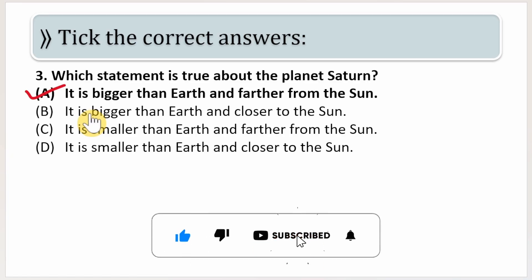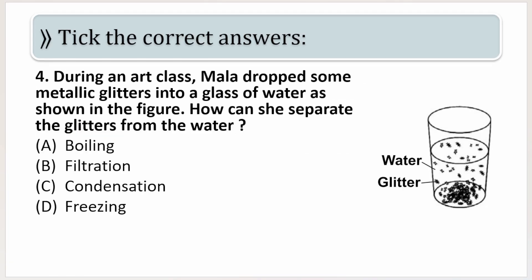If you observe the solar system, you will notice about Saturn that it is bigger in size compared to Earth and also it is quite away from the Sun compared to Earth. Let us see now next question.